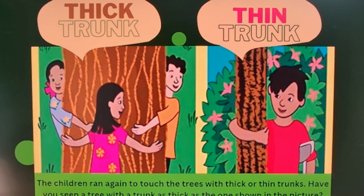Three children together still cannot reach around the full circumference of the thick trunk — they are going around it and still cannot complete the circle. Whereas Dayaram is standing near a thin trunk. Then the children ran again to touch trees with thick or thin trunks, and they understood the difference.